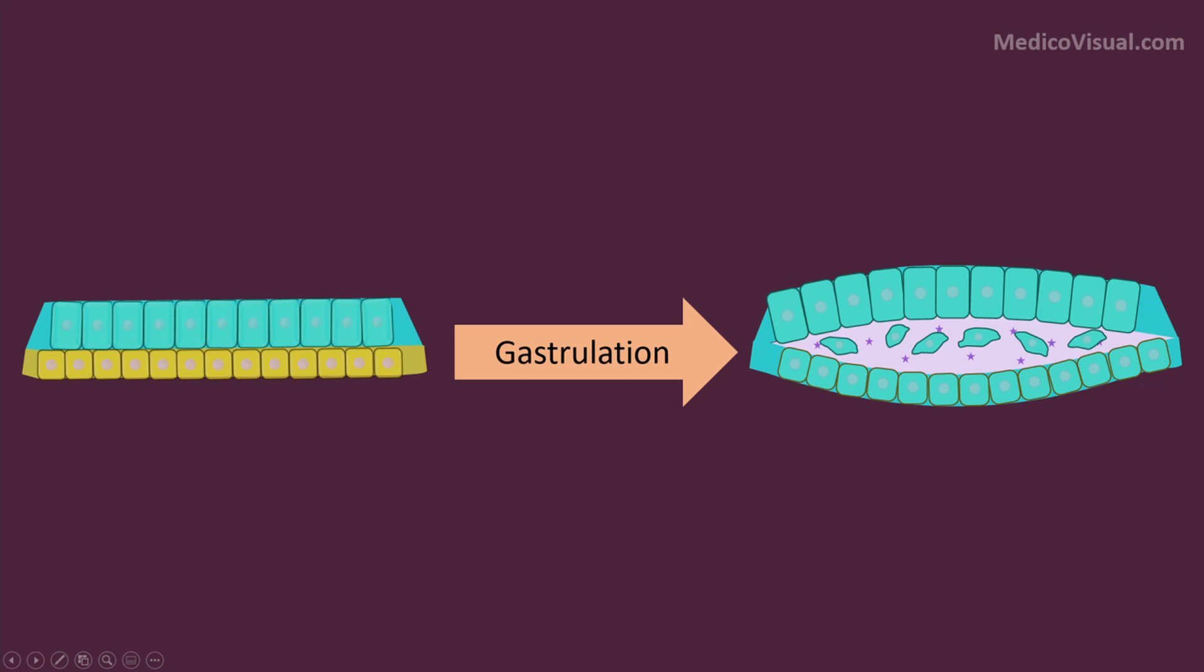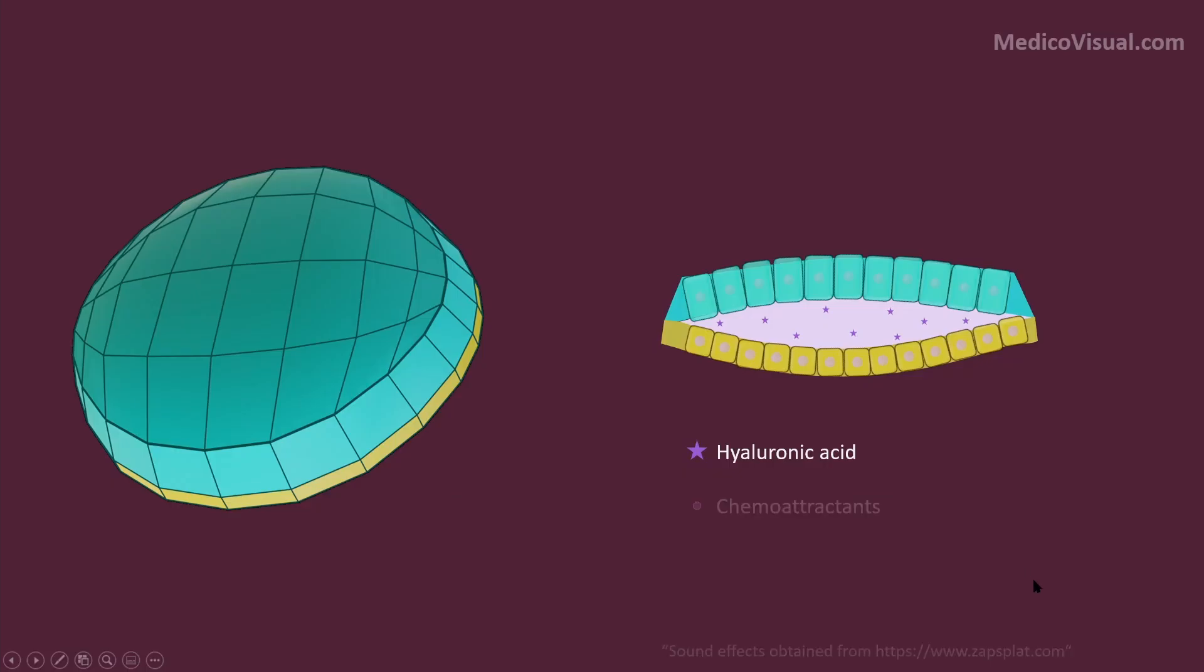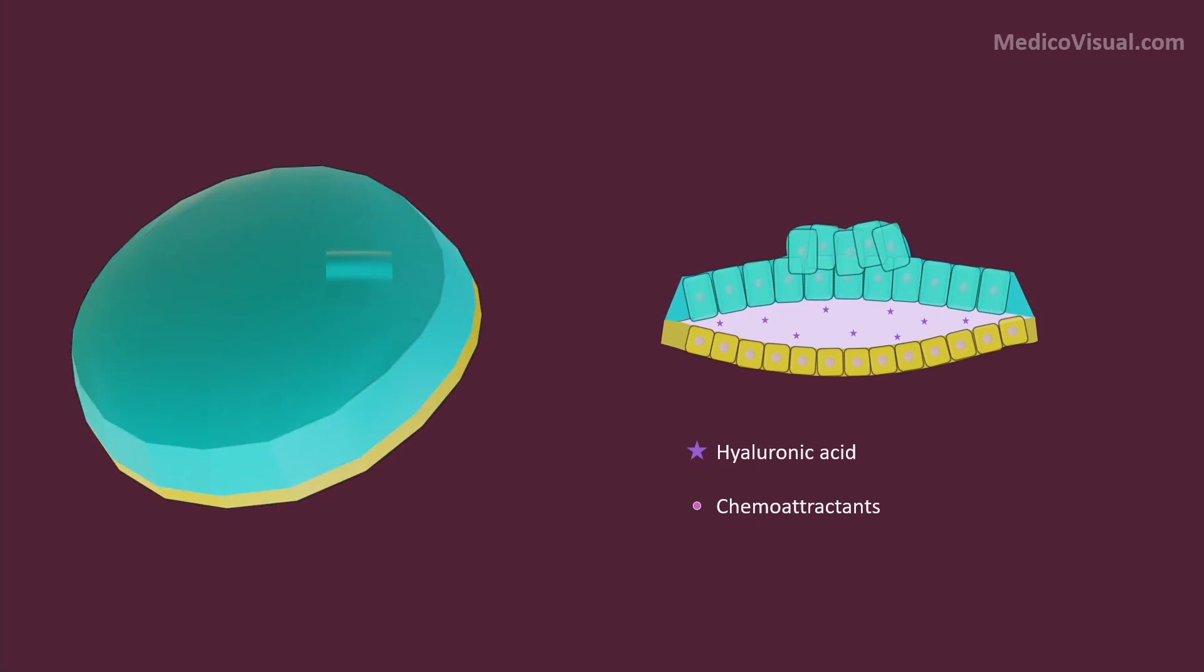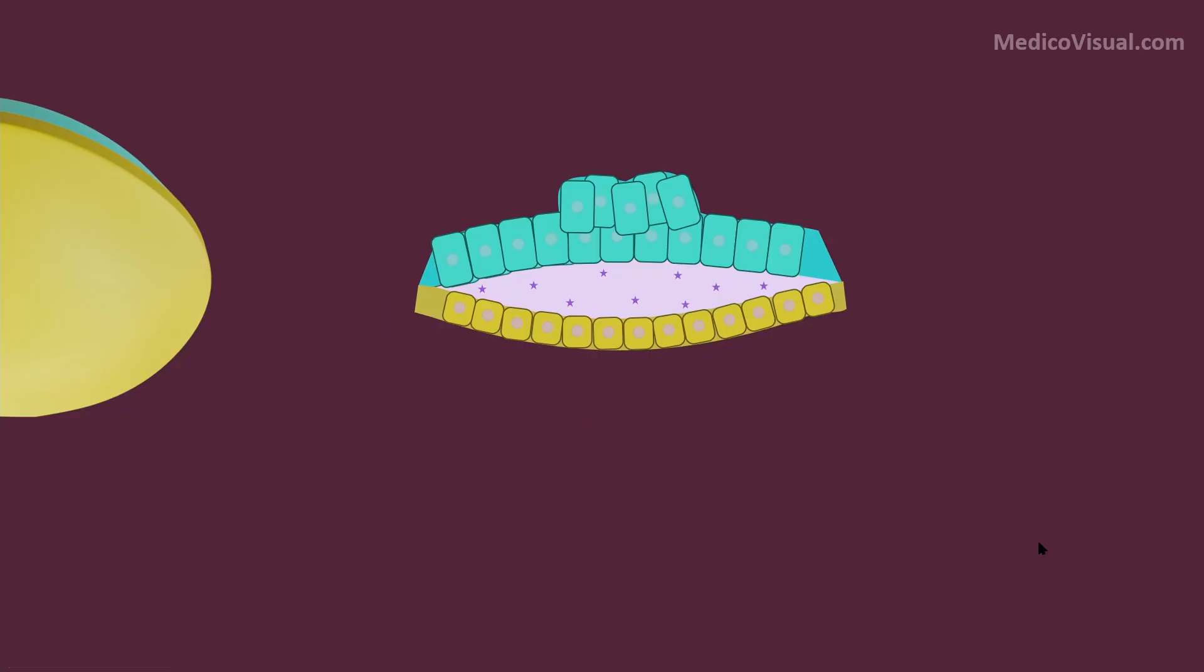The process starts when cells in the caudal part of epiblast secrete certain chemical substances that cause proliferation and migration of peripheral cells towards the midline, hence producing a streak called primitive streak. This streak is delineated cranially by an ovoid swelling called Henson's node or primitive node. The proliferated cells start pinching down, thus leaving a depression or groove behind which is called primitive groove.